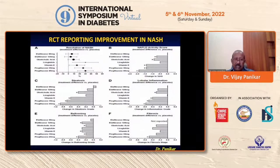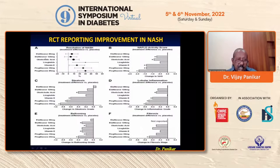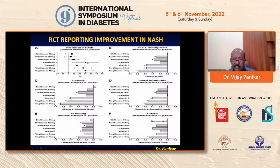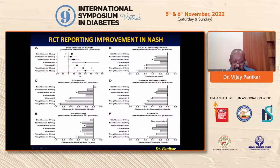Looking at randomized controlled trials across different drugs for fatty liver — for resolution of NASH, aramchol 120mg, obeticholic acid, liraglutide, vitamin E, and pioglitazone 30 and 45mg show results, with the best results with pioglitazone. For NAFLD activity score, steatosis, lobular inflammation reduction, and ballooning — pioglitazone consistently comes up on top. In fibrosis, these studies have shown a slight improvement as well, though fibrosis generally doesn't reverse with most of these drugs.